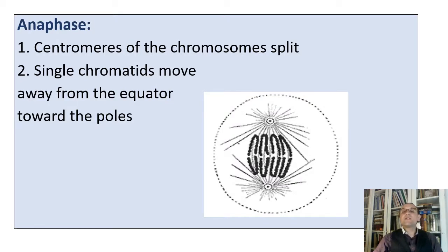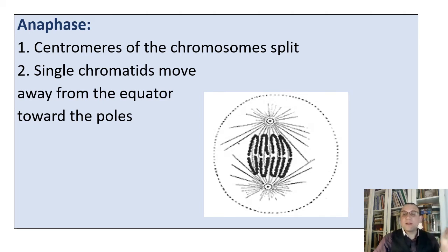Anaphase is the third phase of mitosis. During anaphase, the centromere that holds the paired sister chromosomes together splits. The single chromatids move away from the equator towards the poles.